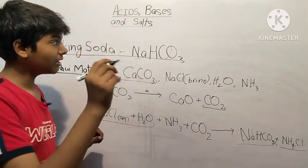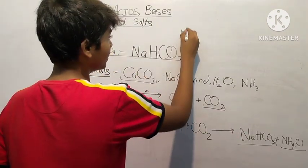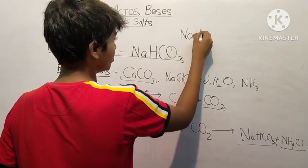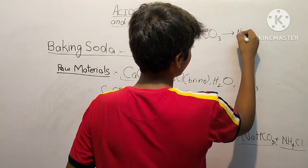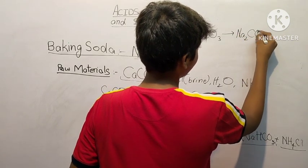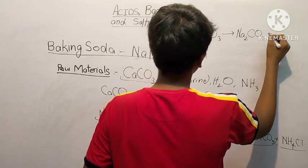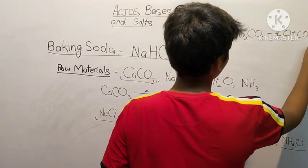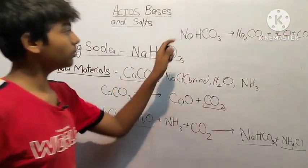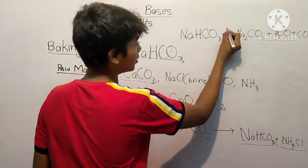Now let's see what happens when NaHCO3 is heated. Sodium hydrogen carbonate on heating produces sodium carbonate Na2CO3 plus water H2O plus carbon dioxide CO2.